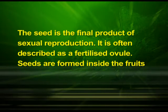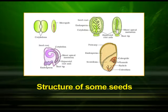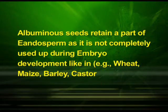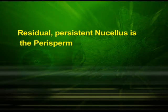A seed typically consists of seed coats, cotyledons and an embryo axis. The cotyledons are generally thick and swollen due to storage of food reserves, as in legumes. Mature seeds may be nonalbuminous or albuminous. Nonalbuminous seeds have no residual endosperm, as it is completely consumed during embryo development, as in pea, groundnut and sunflower. Albuminous seeds retain a part of endosperm, as in wheat, maize, barley and castor. In some seeds such as black pepper and beet, remnants of nucellus also persist — this residual persistent nucellus is called the perisperm.